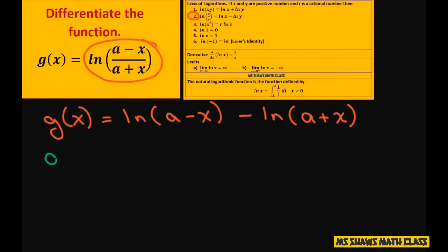So when you differentiate g prime of x, you're going to differentiate this and ln is 1 over x. This is like our x here. So it's going to be 1 divided by a minus x times the derivative of our inner function, which is negative 1.